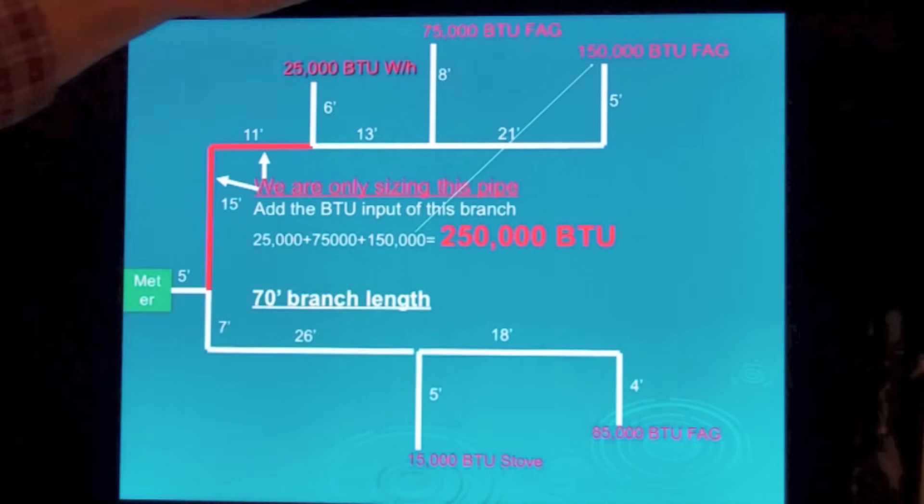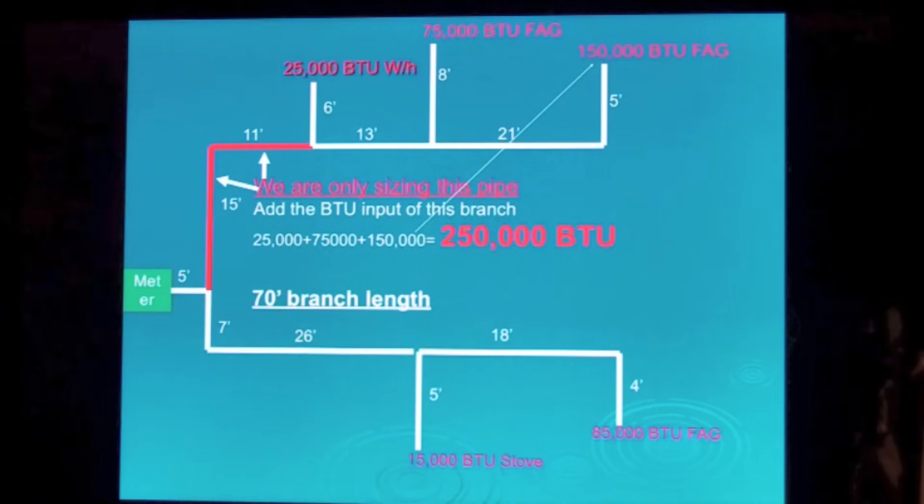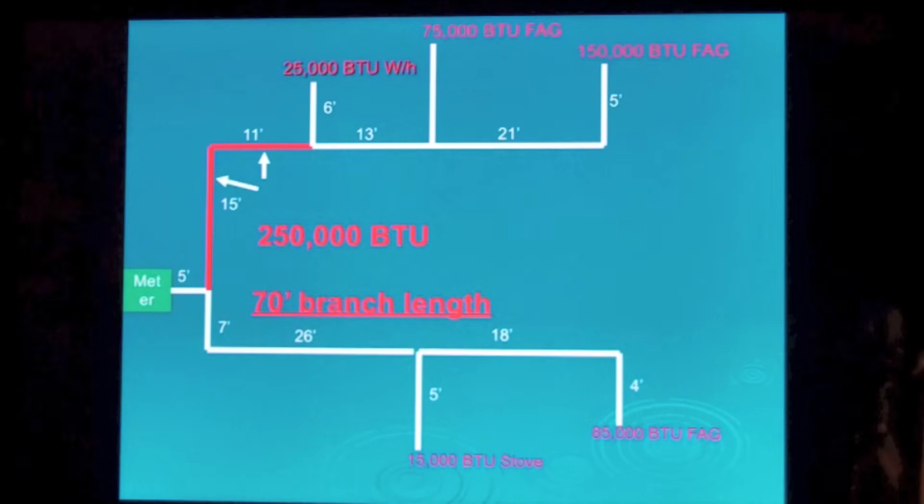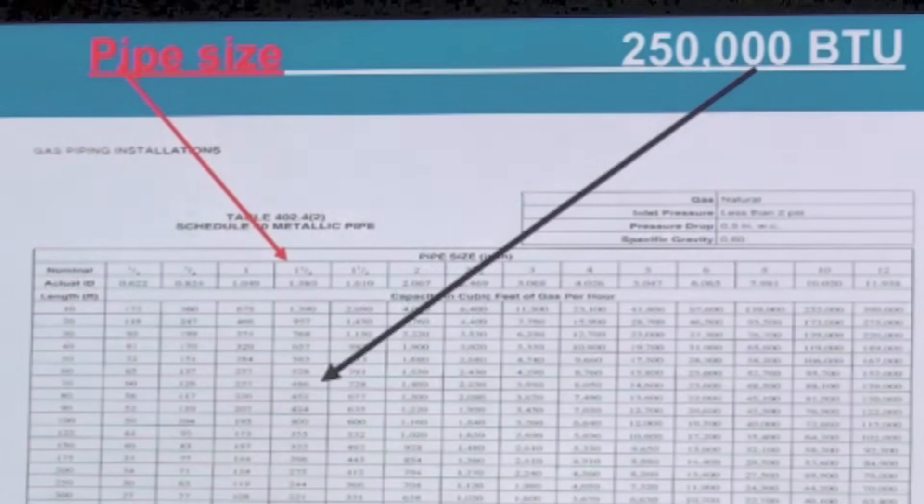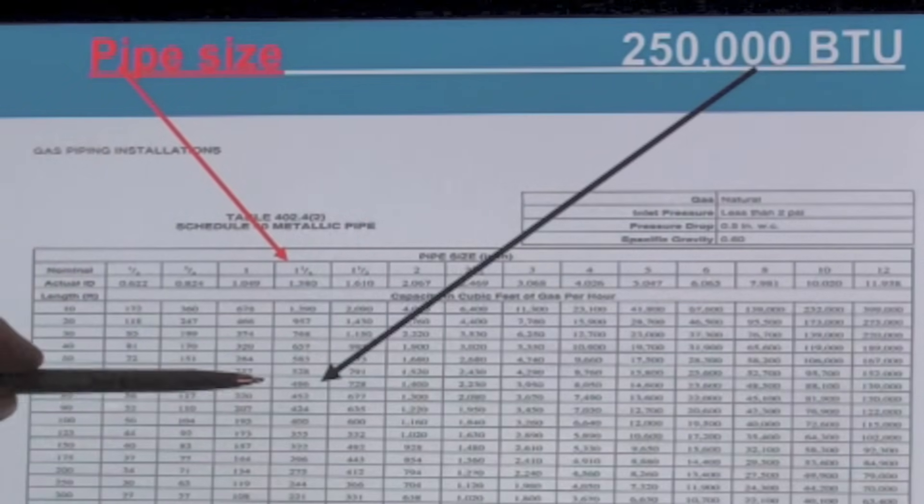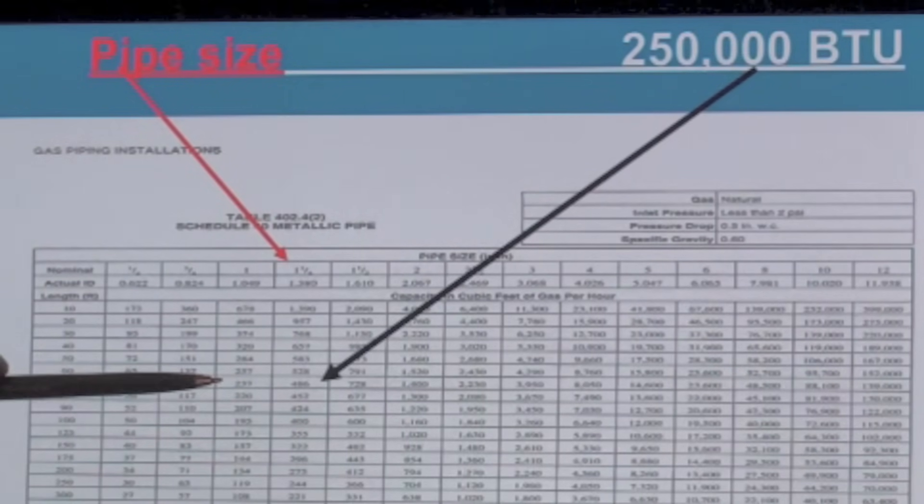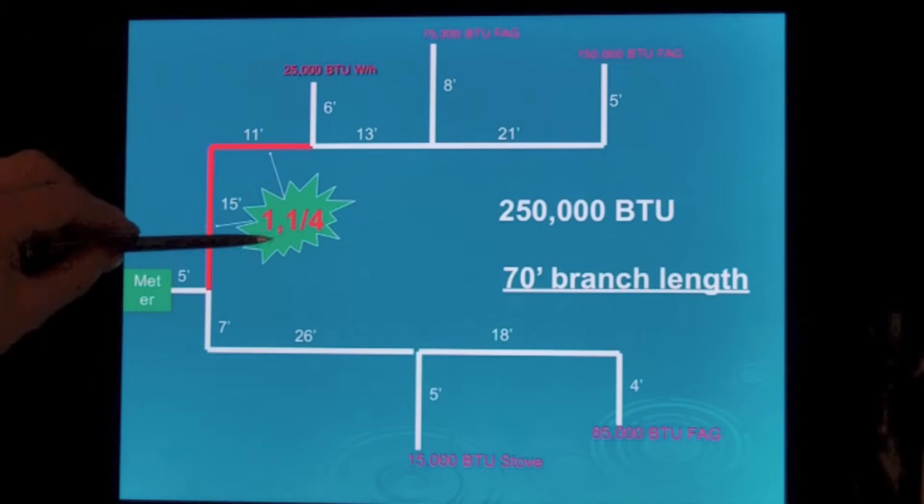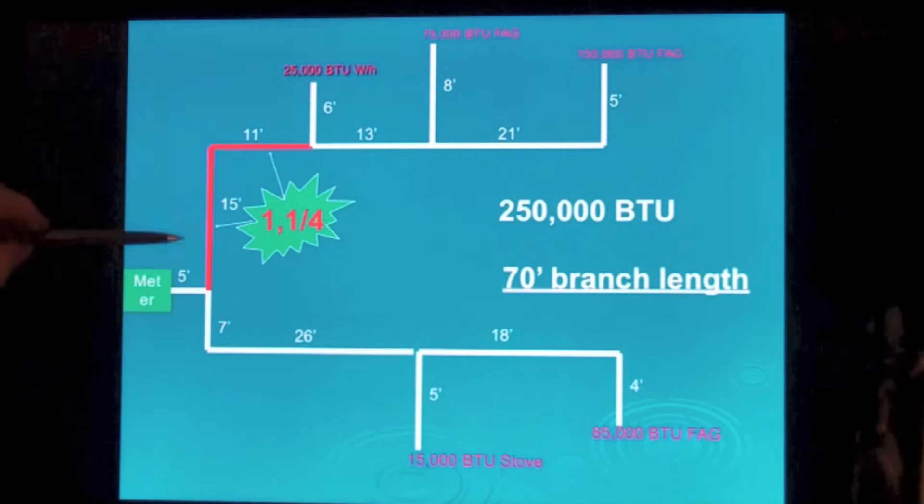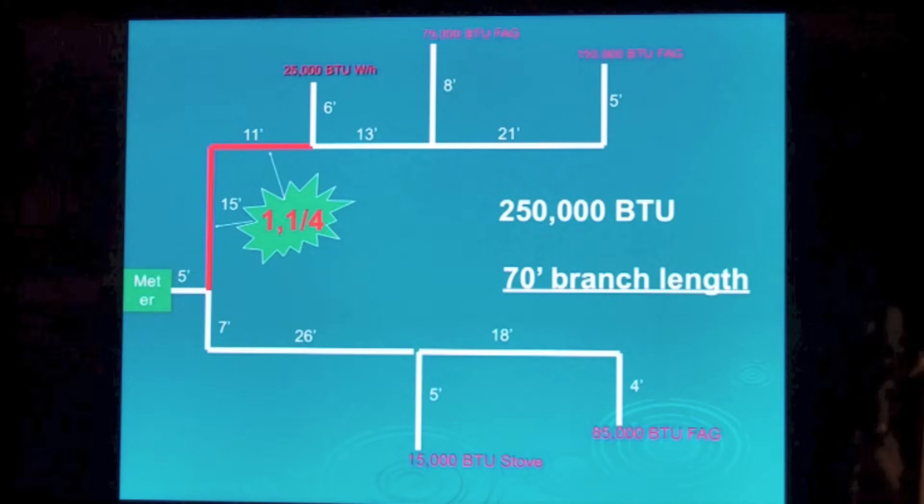Because here's your first one, your second one, your third one. We're going to use that same 70 foot branch length. Now we go to our chart again and use that 70 foot like we did before. We see 486 for an inch and a quarter, and 237 for one inch. So we end up with inch and a quarter there also.